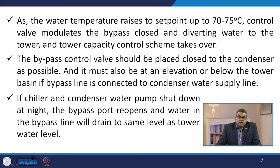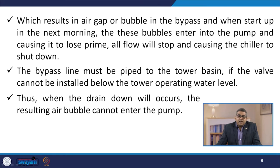Sometimes, if the chiller and condenser water pump shut down at night, the bypass port reopens and water in the bypass line will drain to the same level as the tower water level. This can result in an air gap or bubble in the bypass. When starting up the next morning, these bubbles may enter into the pump, causing it to lose prime. All flow will stop, causing the chiller to shut down. Therefore, sometimes priming may be required.